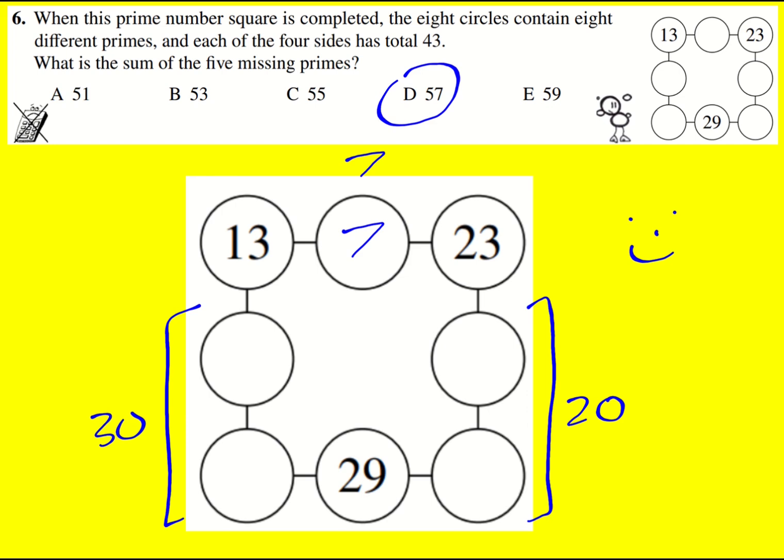Remember they have to be different, so I can't use 7 here again, or 7 and 13. I just thought of some possibilities, maybe 3 and 17. That worked.